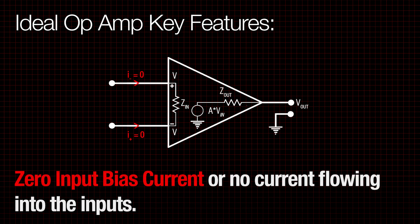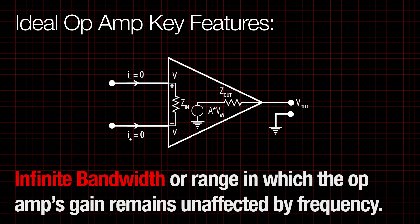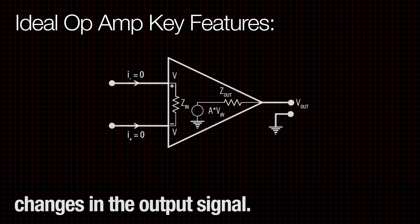Zero input bias current, or no current flowing into the inputs. Zero input offset voltage, or identical inputs resulting in an output of zero. Infinite bandwidth, or range in which the op-amp's gain remains unaffected by frequency. Infinite slew rate, which is a measurement of how quickly the output port responds to changes in the output signal.